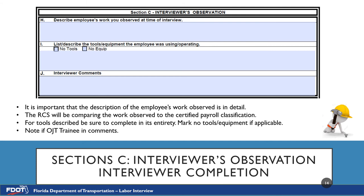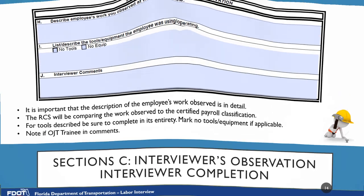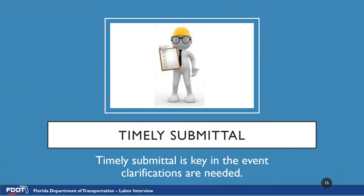Letter J is Interviewer Comments — any additional comments can be written in this section, including if the employee is an OJT trainee. Timely submittal is key in the event clarifications are needed. If interviews are submitted months after they were conducted, it will be difficult for you as the interviewer to remember details if a discrepancy was discovered. As the eyes and ears for the RCS, the RCS relies on you for accurate observations and will reach out to you if any clarifications are needed.